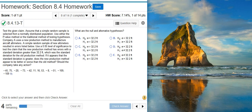Test the given claim. Assume that a simple random sample is selected from a normally distributed population. Use either the p-value method or the traditional method of testing hypotheses. Company A uses a new production method to manufacture aircraft altimeters. A simple random sample of new altimeters resulted in errors listed below.